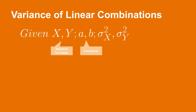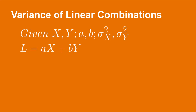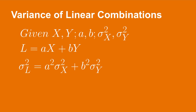Now, how does uncertainty propagate through linear combinations? Given two random variables X and Y, constants a and b, and the variances σ²X and σ²Y, with L defined as aX plus bY, the variance of L is equal to a squared times the variance of X plus b squared times the variance of Y. This equation only holds when X and Y are independent. Because we are squaring the constants, there is no way for the variance of the combined variable to be smaller than the variance of either individual variable — two random events should lead to more randomness, not less.